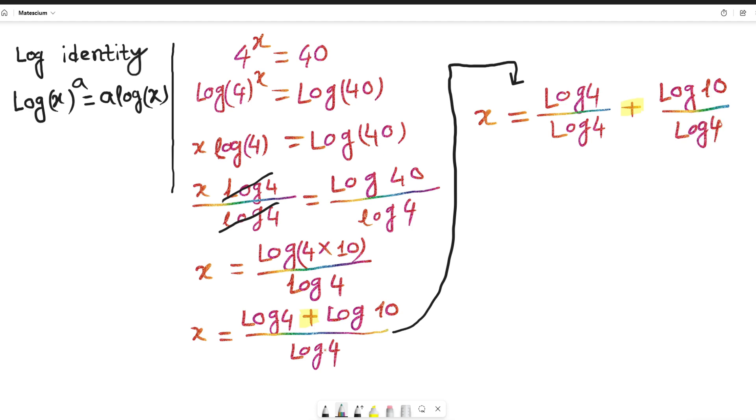So this log 4 numerator and this log 4 denominator, they cancel each other and remaining is 1 plus log 10. Interestingly, log 10 equals 1, so I can write this part as 1 plus 1 divided by log of 4.